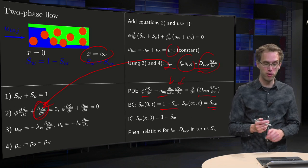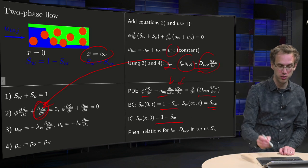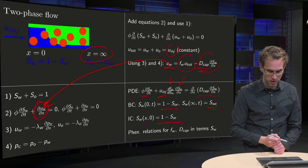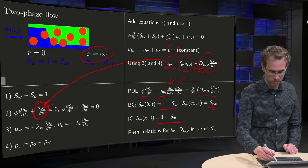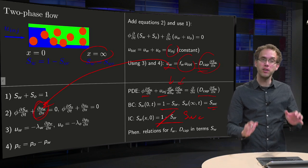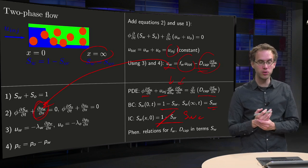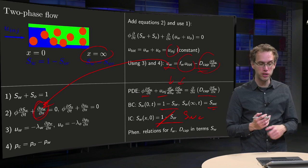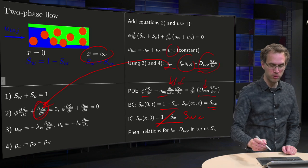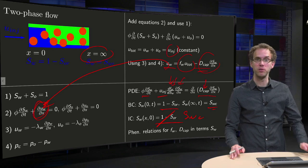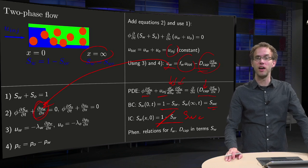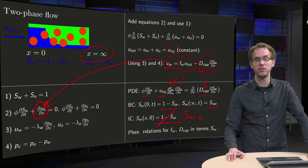Initially you are full of oil, so water saturation equals s_wc. There you have your boundary and initial conditions. Your problem is fully specified once you specify D_cap and F_w in terms of S_w. Then you have your PDE and initial-boundary conditions, and you can solve that with your favorite method.